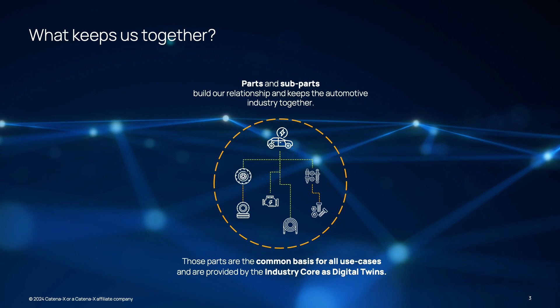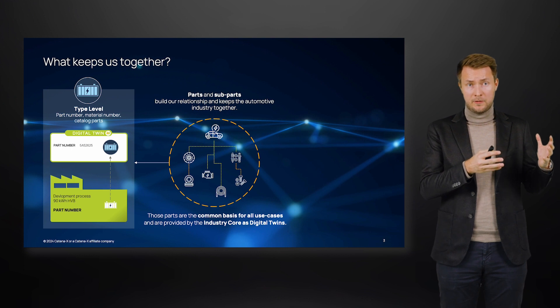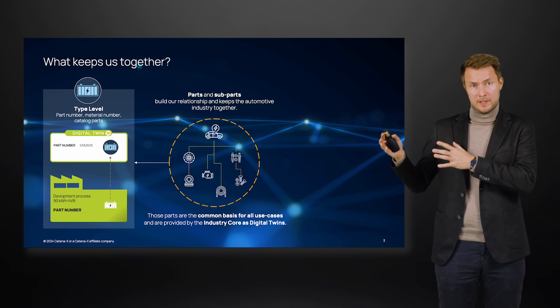In our industry, a component can be described on two levels. First, the type level. Here, the component can be described generally. The identifier is a catalogue, material or part number. This part number is typically created when designing a new component — it differentiates, for example, a 6-gear transmission from an 8-gear transmission.